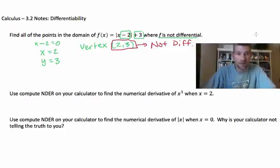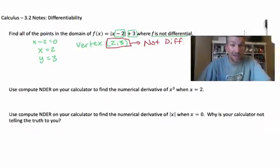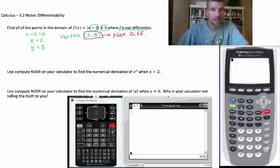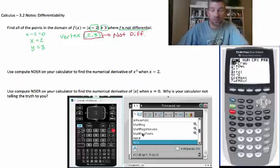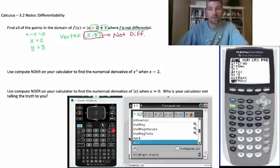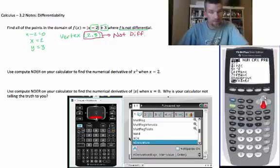Some other things we can do with our calculator that are pretty fun is we can use what's called NDER to calculate a numerical derivative. And I'll put a calculator up right now, and you can see what that looks like. It's really easy. And this gives us an actual numerical value for the derivative of x cubed when x is 2. And there's how you do it. You can do it with Nspire and the 84s and the 83s.